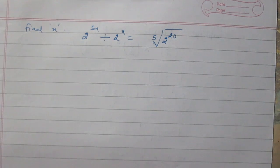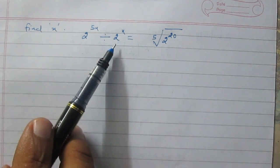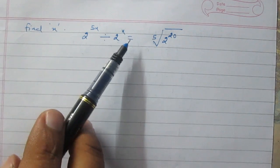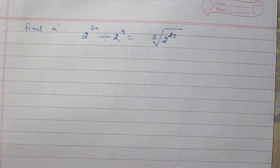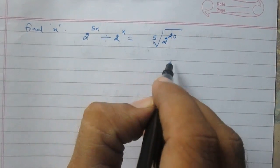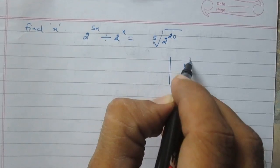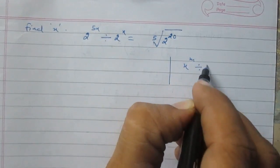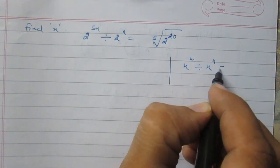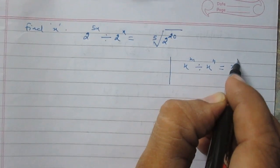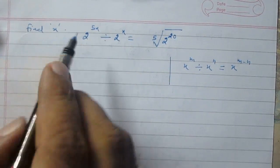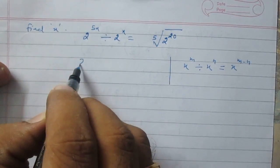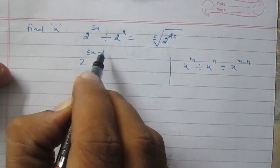Find x if 2 raised to the power 5x divided by 2 raised to the power x is equal to the fifth root of 2 raised to the power 20. According to the laws of exponents, we know that x raised to the power m divided by x raised to the power n is equal to x raised to the power m minus n. So, using this rule on the left hand side, we will get 2 raised to the power 5x minus x.